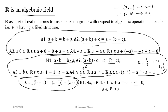We have to establish x = 0 from the hypothesis x + a = a. This is a p implies q situation. We start with the given: x + a = a. From A4, for every a there is a −a, so we add −a to both sides. This gives: (x + a) + (−a) = a + (−a).